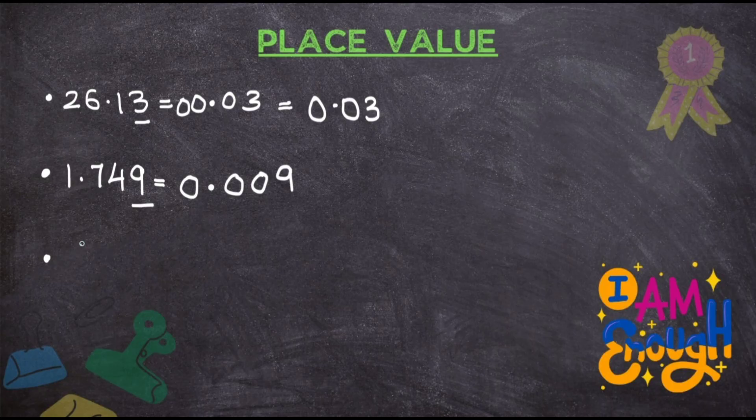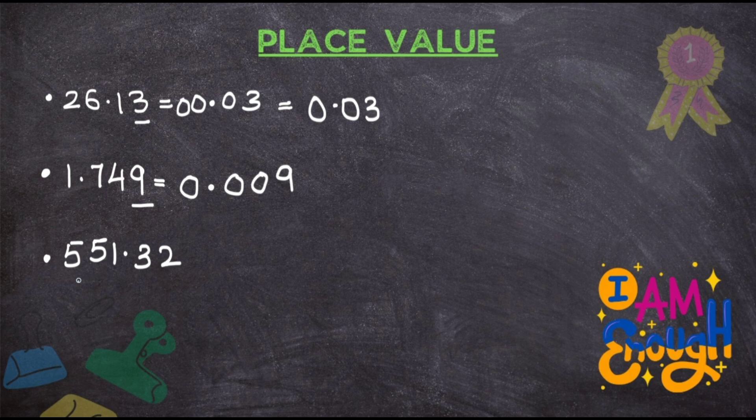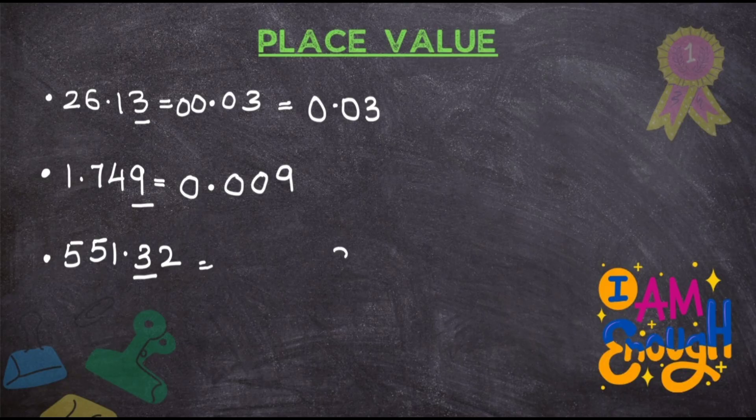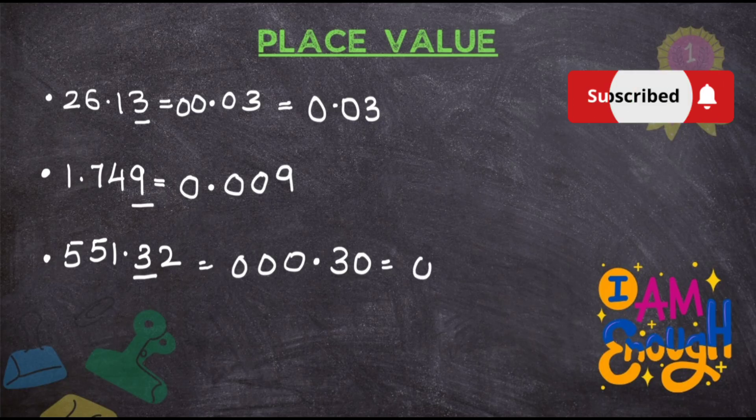Now, next question I will take is 551.32. In this question number 3 is underlined. What you will do is write 3 first and put 0 for all other digits. 2 will be 0. There is no digit before 3, there is directly a point. So put the point. Then 3 zeros. Here you can avoid putting all so many zeros before the point. So the answer for this you can write it as 0.30.